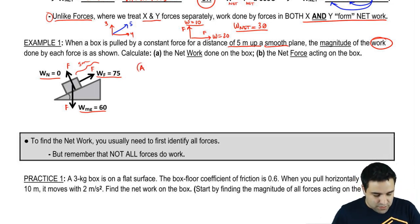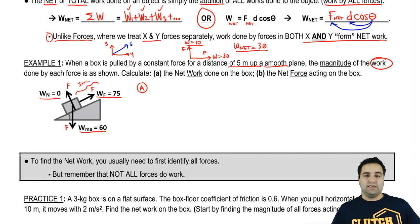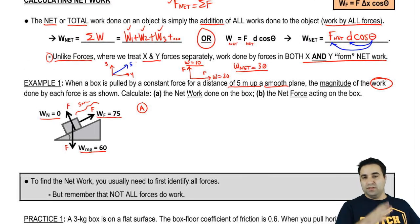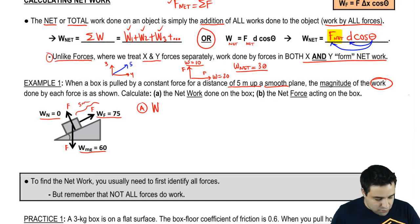And I want to know what is the net work done. So there's two ways you can calculate net work. You can add up all the individual works, or you can find the net force. Here, I'm given the works, so that's what I'm supposed to do. So net work is going to be the sum of all the works, which is all these guys added together.